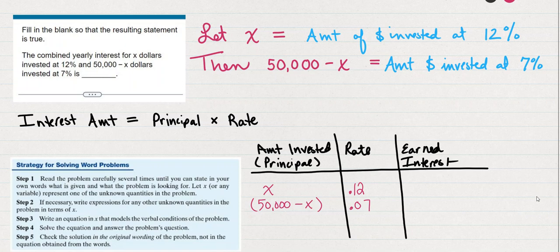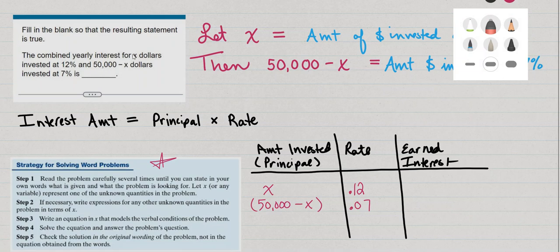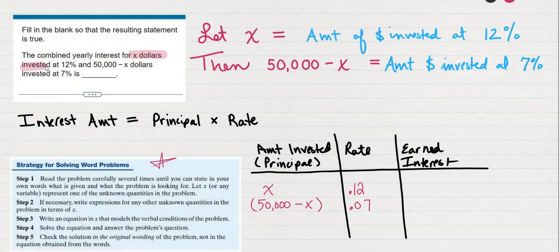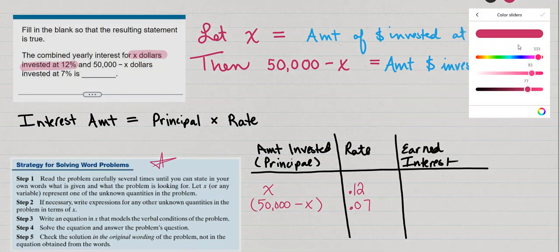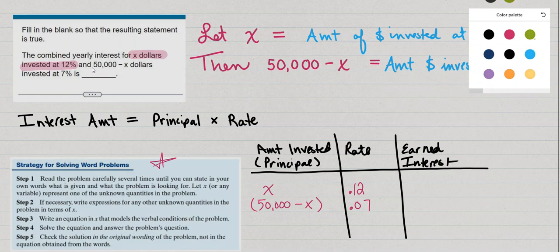I've put this information in the chart and here's at the bottom we've got the strategy for solving word problems. I want to show how this work fits in. And it's steps one, two, and three, really. Step one is to read the problem and define a variable. So I've done that by saying let X equal the amount of money that's invested at 12%. I did that because they've shown that, let me highlight it, combined interest for X dollars invested at 12%. So they've defined X as the number of dollars invested at 12%. Next,